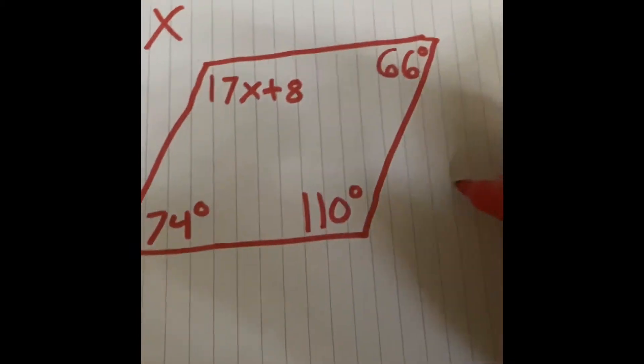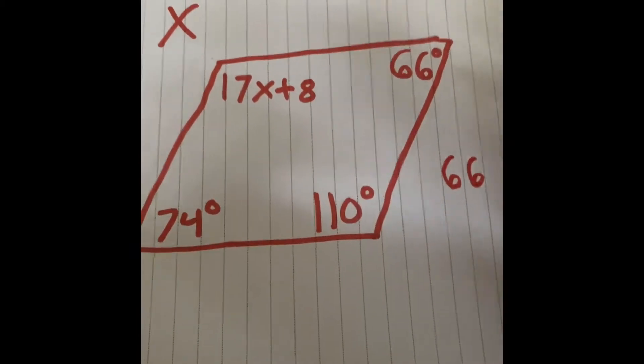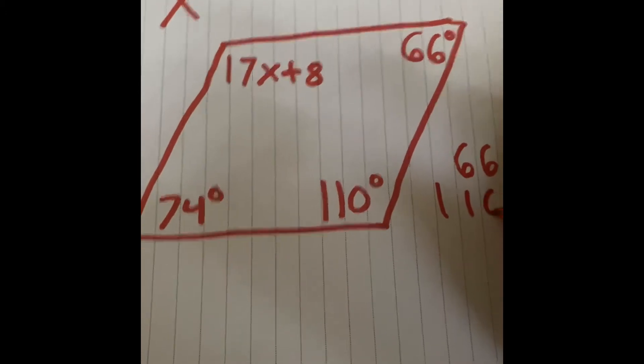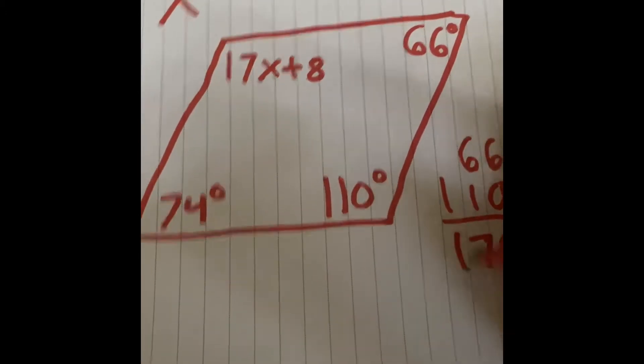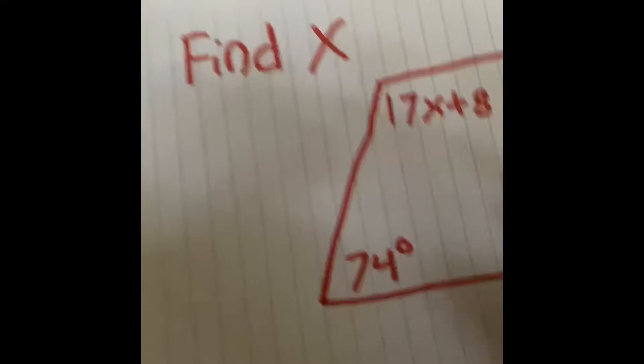So 66 plus 110 is 176. Then I need to add that 74.